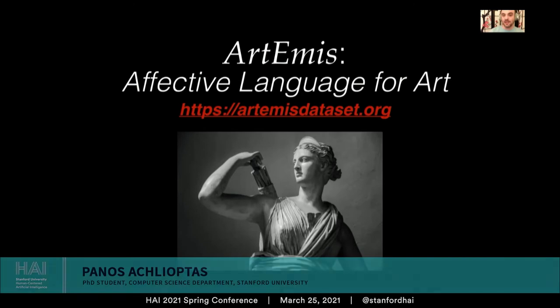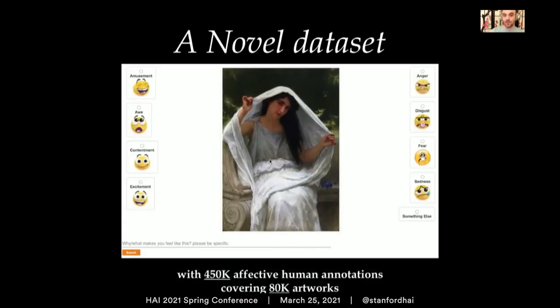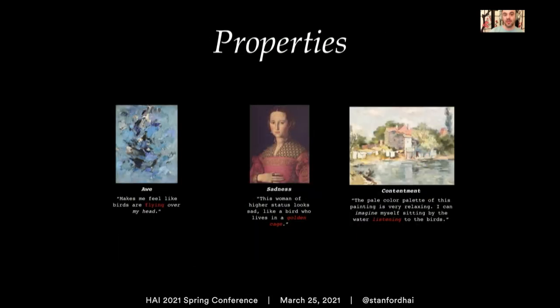Hi, I'm Panos, and this is the presentation for Artemis, Affective Language for Art. In Artemis, we introduce a dataset that contains affective responses of thousands of humans with respect to how they feel when they observe a famous work of art, and crucially, a written explanation regarding why. The collected explanations are very rich in abstract, metaphorical, and imaginative content.